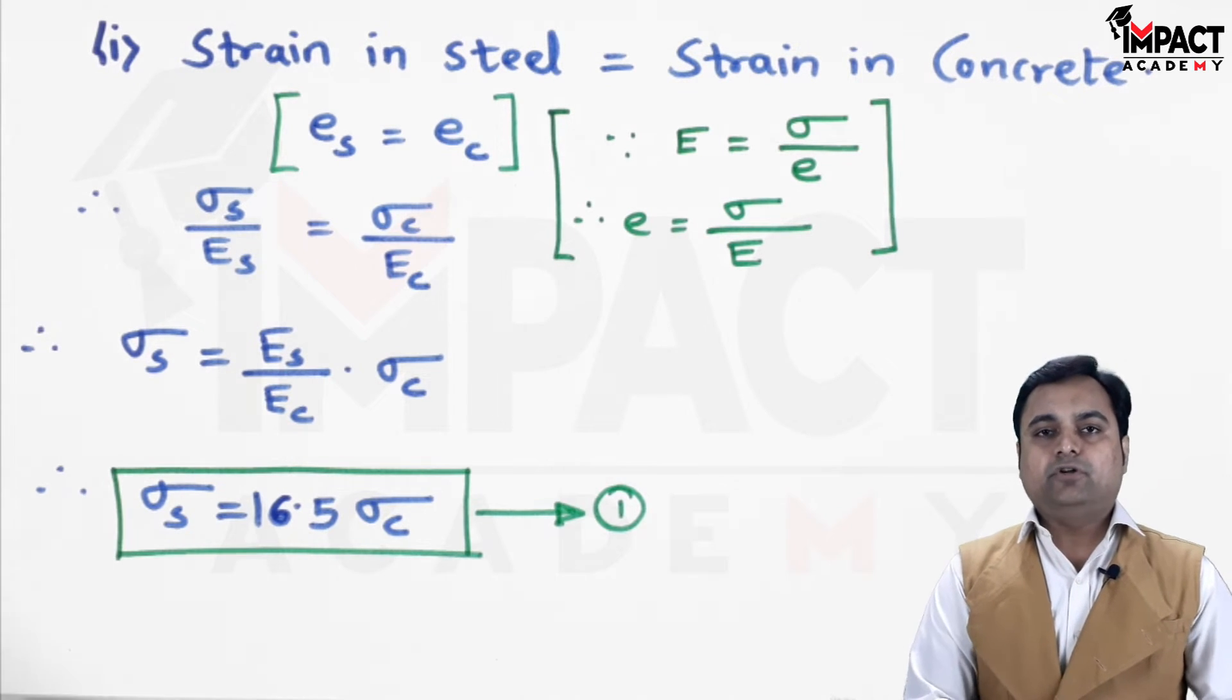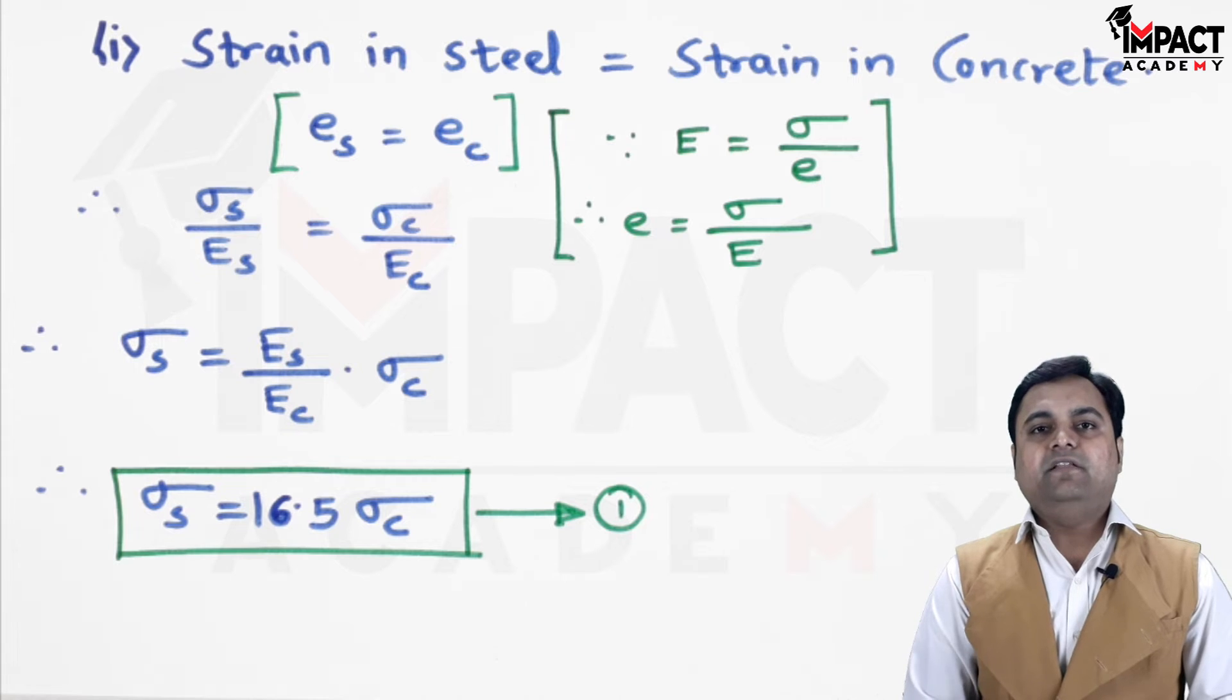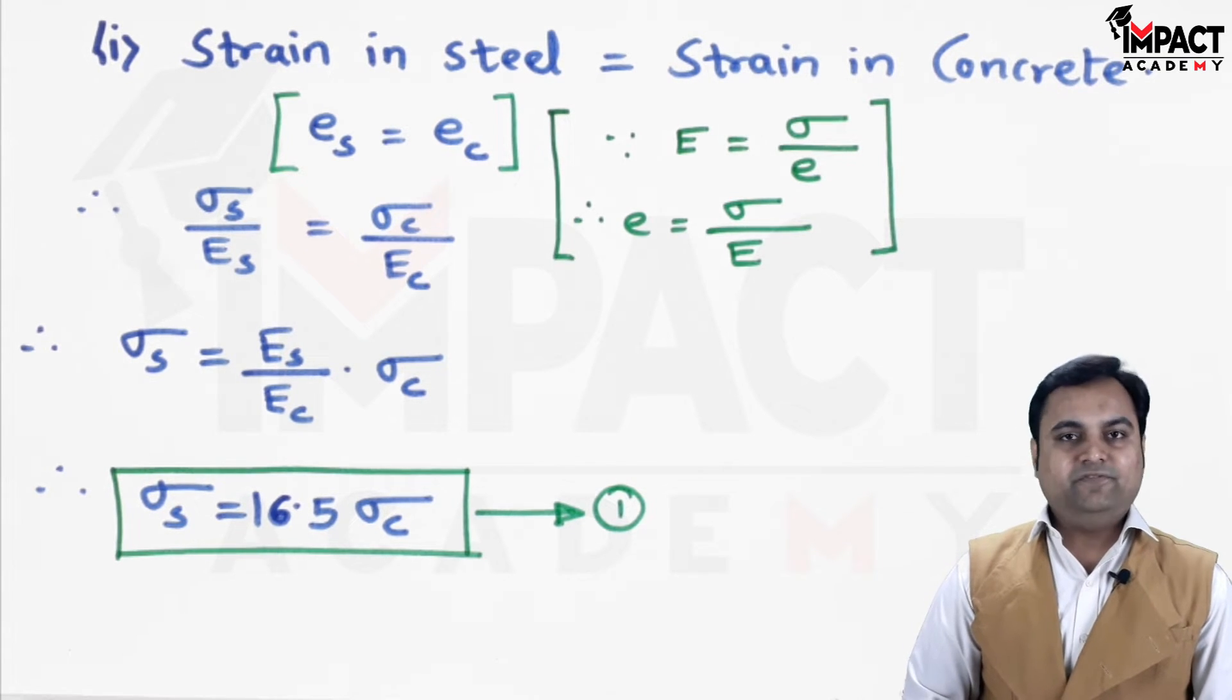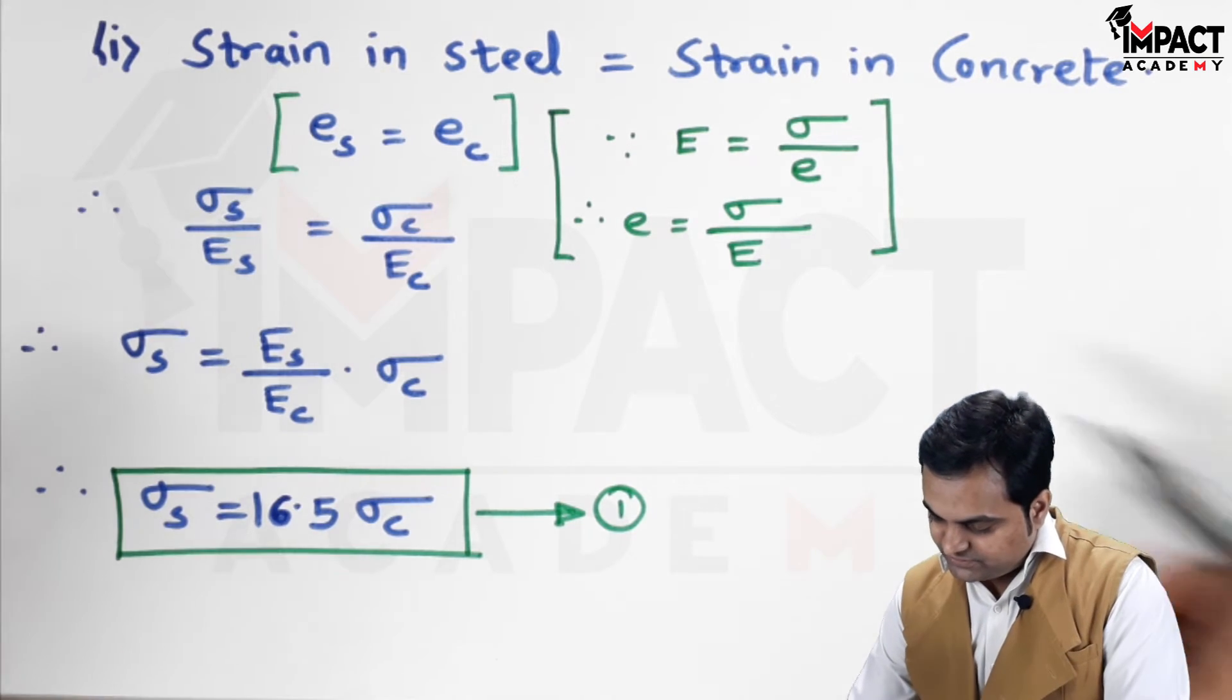And, if the length of the rods are not equal, like if the length of steel and the length of concrete are different, in that case, we would take the deflection as equal. So, that is the condition which we have to remember. Now, after this first condition, the next condition is: